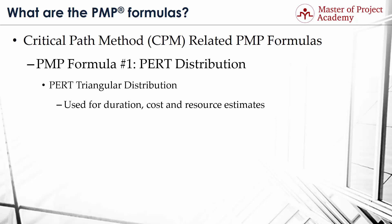Then you can use the PERT triangular distribution to estimate the activity duration. Accordingly, the PMP formula for the PERT triangular distribution is as follows: EAD equals the sum of O and M and P, all divided by 3.